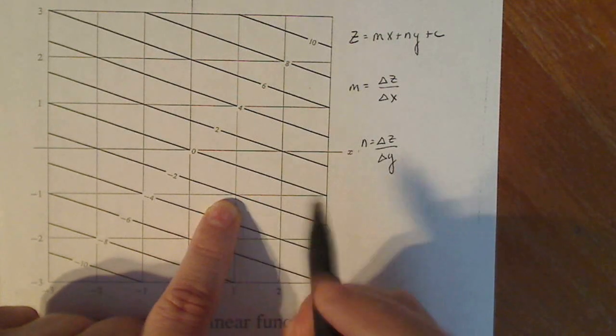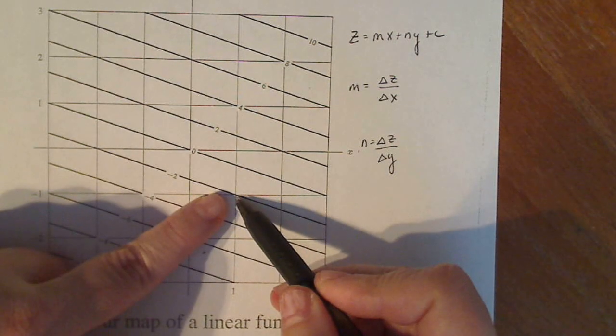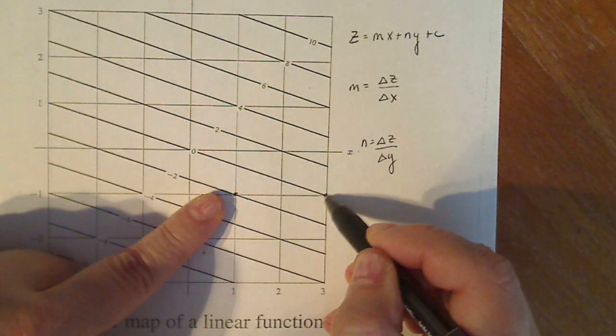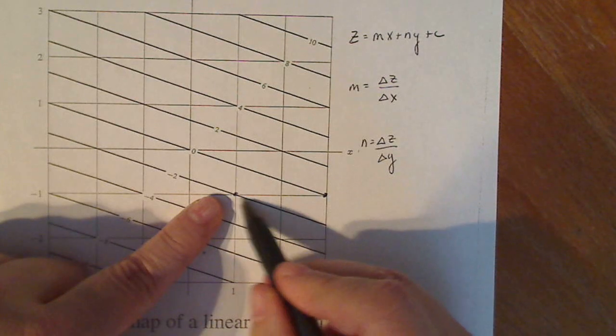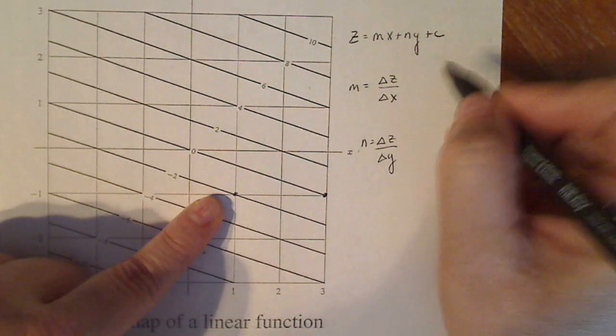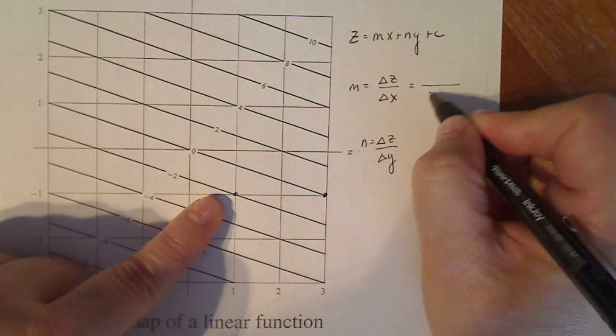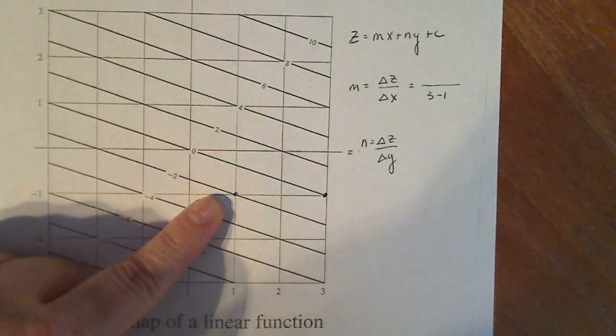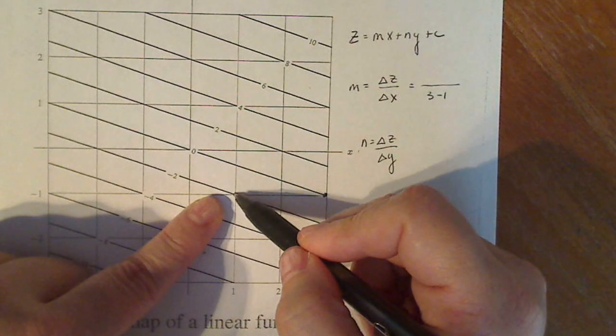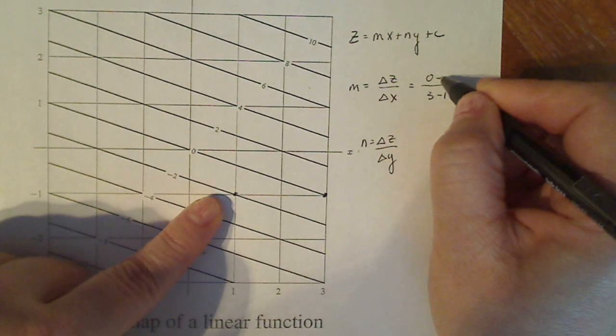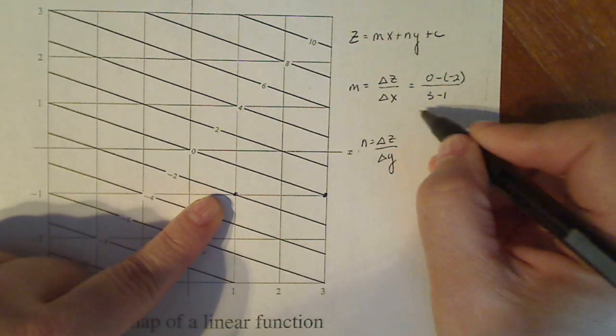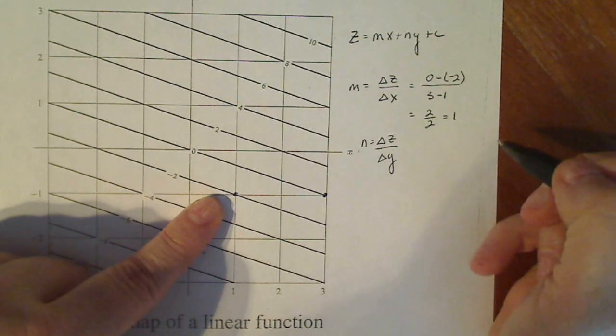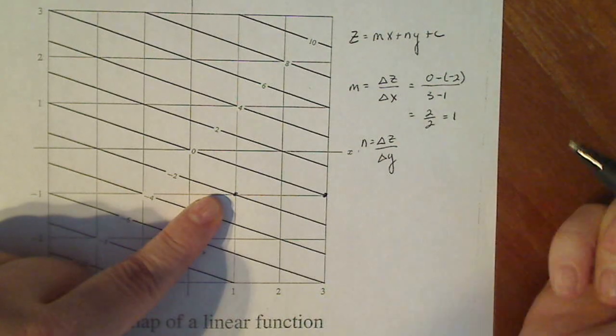If I look at this change in X, so my change, I go from this point to this point. My change in X is three minus one. While my change in Z, I go from zero minus a negative two. So that will leave me with two over two, which is one. So my slope in the X direction will be one.